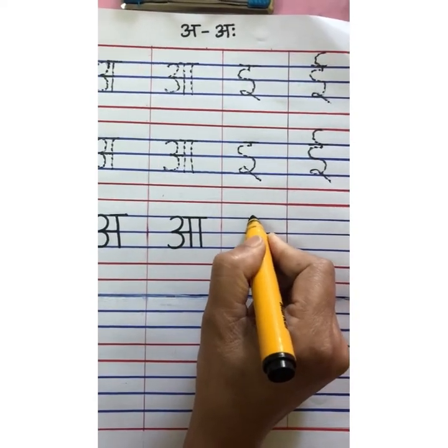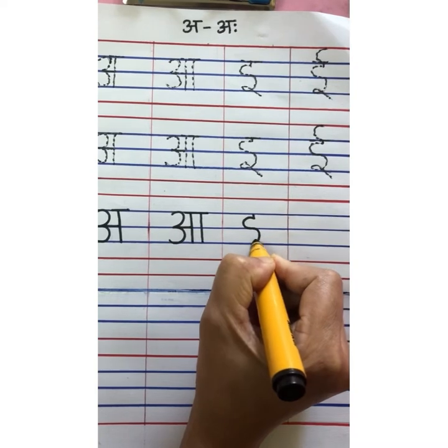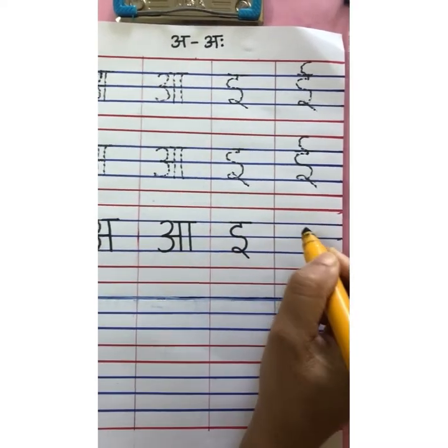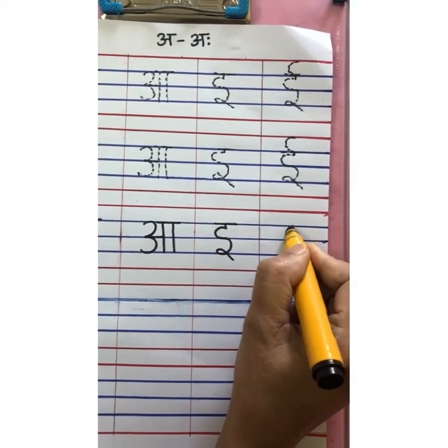A, A, A, then comes choti E. Write choti E. After choti E comes badi E.